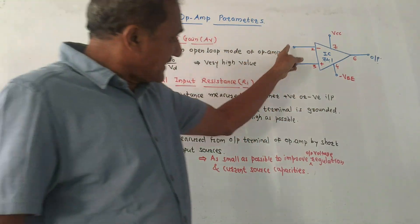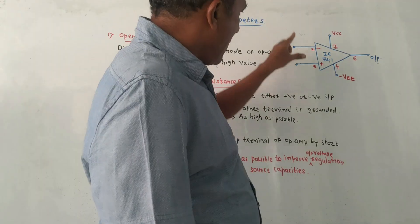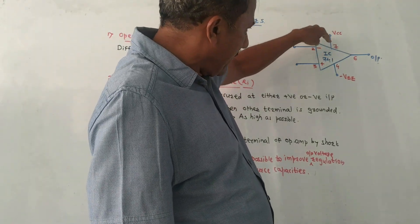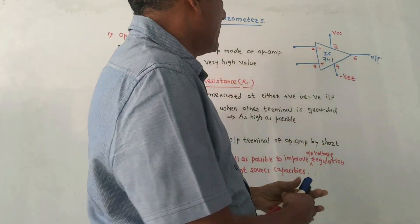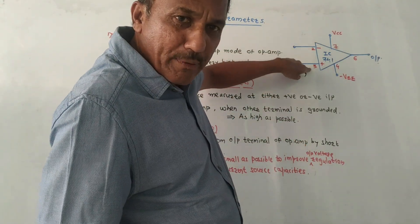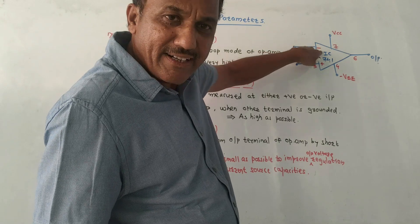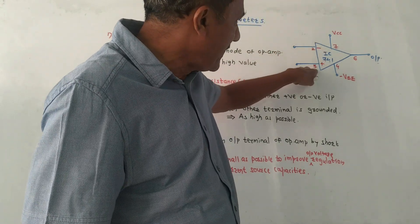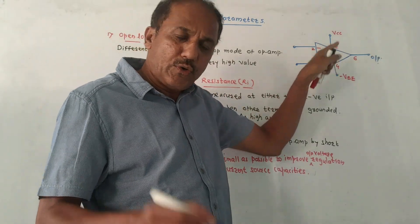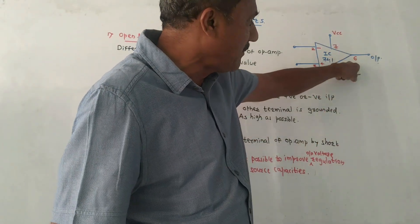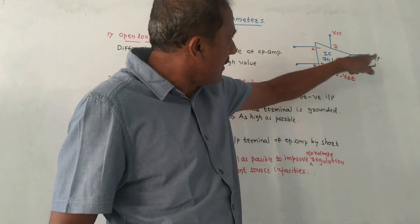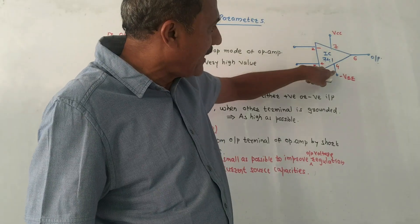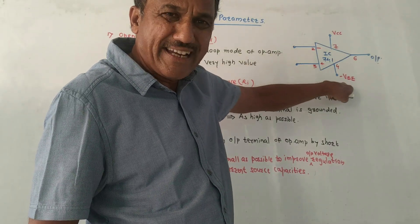This is the symbol of op-amp. I have drawn the pin connection related to IC 741. Pin number 2 and 3 are input pins. For pin number 2, I have marked a negative sign — it is called the inverting terminal. Pin number 3 has a positive sign — it is called the non-inverting terminal. From pin number 6 we can take the output, pin number 7 is connected to plus VCC supply, and pin number 4 is connected to minus VEE supply.